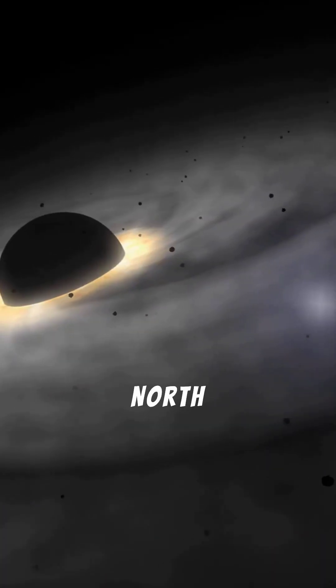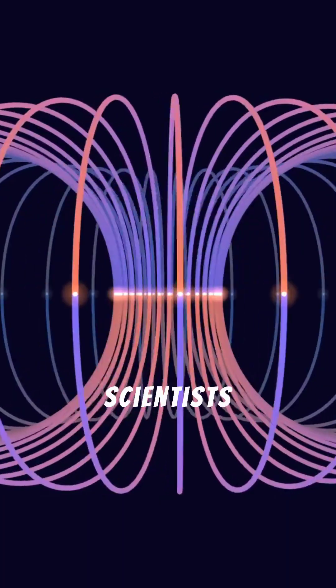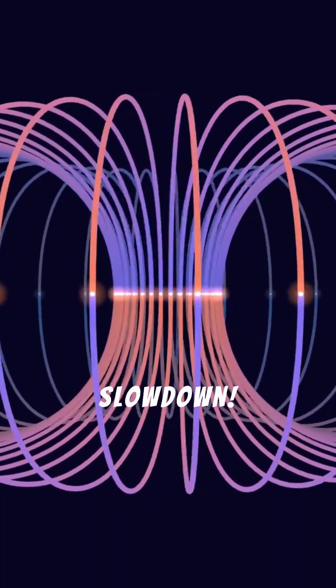You might have heard that the North Magnetic Pole has been racing across the planet, speeding from Canada towards Siberia. Scientists now think this crazy movement might be linked to the core's slowdown.